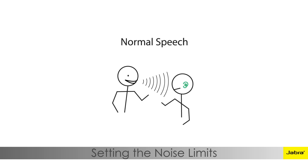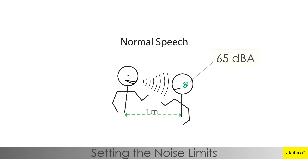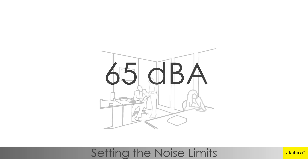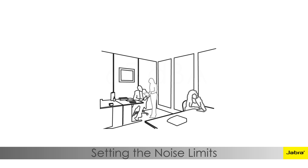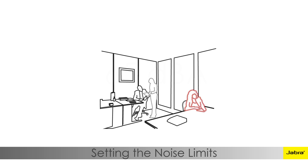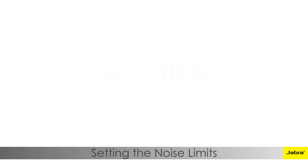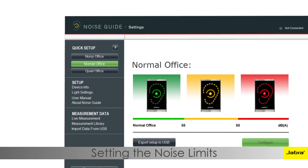Setting the Noise Guide levels: during a normal conversation where people are approximately one meter apart, the dBA level for the listener is around 65 dBA. This level serves as a good baseline setting for normal offices where the work may involve periods of concentration while reading or writing documents, as well as the occasional conversation with colleagues.